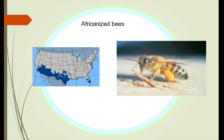In China, attempts to control the bee problem resulted in the bees being entirely wiped out. There's an area in China responsible for the best pear production that now has no bees, which means all the pear trees have to be pollinated by hand. Entire communities spend their spring self-pollinating all the trees. Unfortunately, people are moving out of the area and there may be a severe shortage of pears in China very soon.